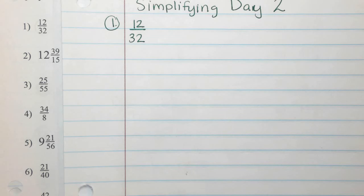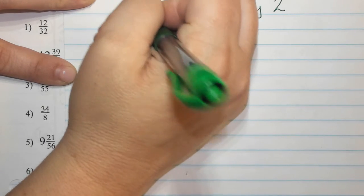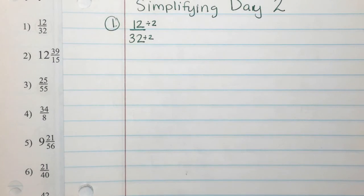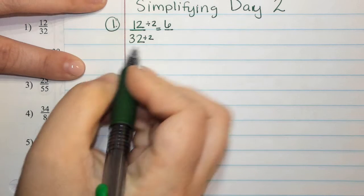12 over 32. Now I can make factor trees if I need to, but those are even numbers. So what do I know I can divide by, Peyton? Two. I know I can divide these by two since they're even. There's another number we could have picked. If you know of a larger number, you can use a larger number. 12 divided by two gives me six. 32 divided by two. That one's a little bit trickier.